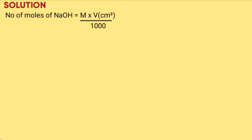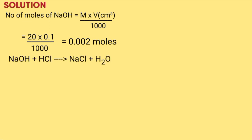Solution. Number of moles of sodium hydroxide = MV over 1000 = (20 × 0.1) / 1000 = 0.002 moles. The equation: NaOH + HCl → NaCl + H₂O. The mole ratio is 1 to 1.